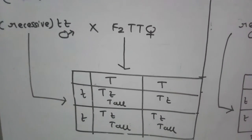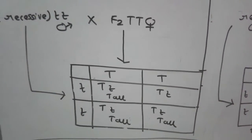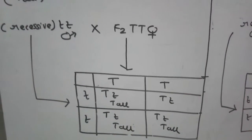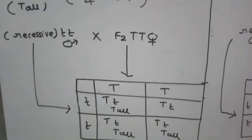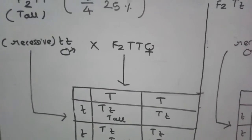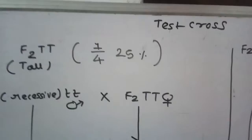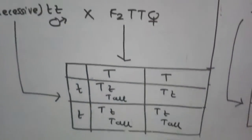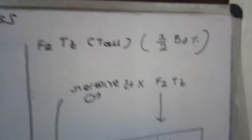At the end of the test cross, all the plants that we get will possess dominant character. That means all the plants will be tall. No dwarf plant will be obtained. It is not possible to get any other plant. So if the F2 is capital T capital T, then after test cross all plants will be tall.